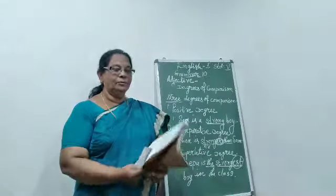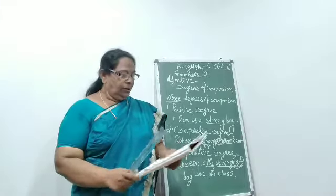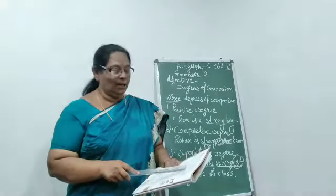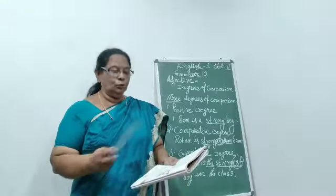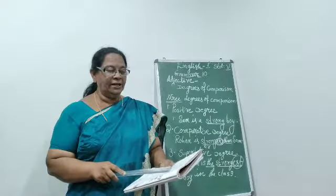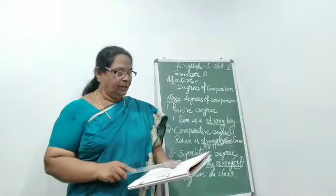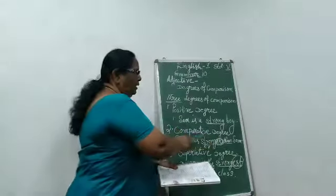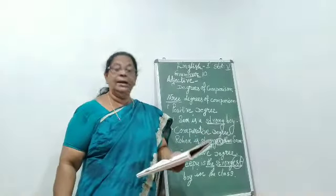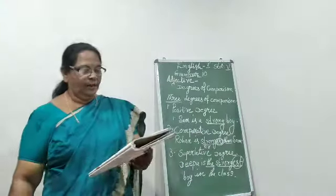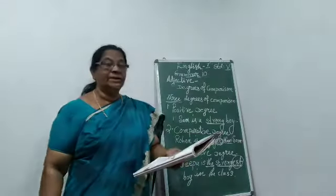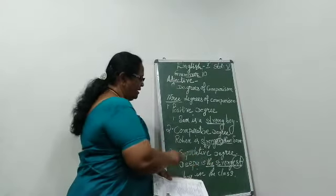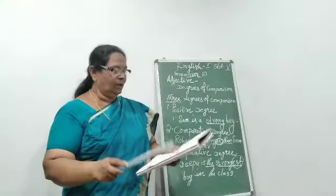Turn to the next page and see the rules given there. When we want to suggest equality — comparing two things — we use 'as': 'Uji is as pretty as her sister.' We often use 'than' with comparative forms — I have already told you that: hotter than, heavier than, bigger than, stronger than. And we use the word 'the' with superlative forms — I already explained that: 'Debu is the strongest.'